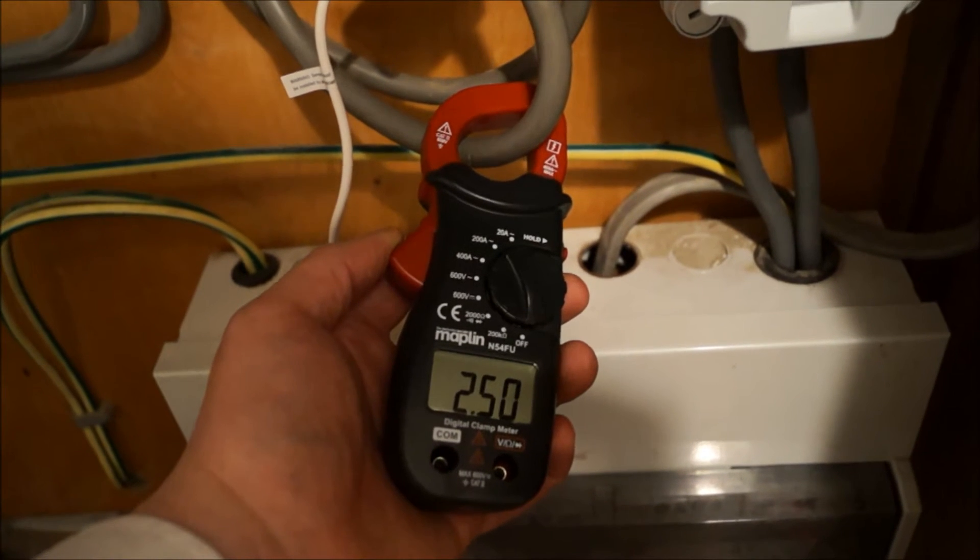Just for people interested, this is the clamp meter in use, my house is drawing 2.5 amps. This is connected around the mains meter tail and it simply comes out like that, drawing nothing.